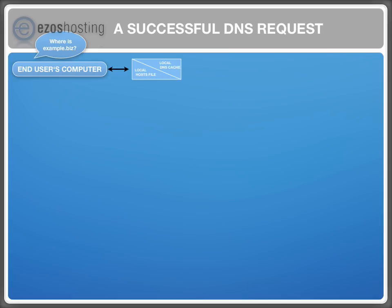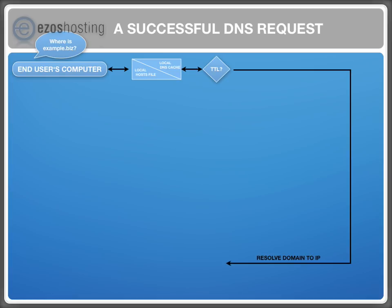Every time you visit a web page its IP address is saved for a few hours on your local computer, so that you don't have to look up the IP address with every page call over and over again. This is called the local DNS cache. It also stores a timestamp so that your computer knows when it should do a fresh look up of an IP address. This is called the TTL, the time to live. So if an IP address was previously cached on your computer, it would automatically resolve the domain to the IP address of example.biz and no further action would be required.